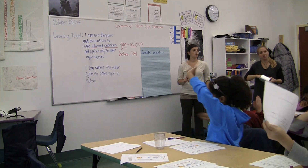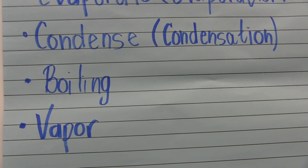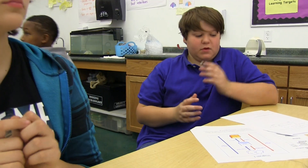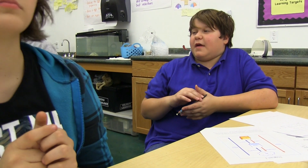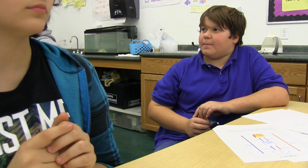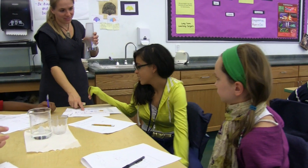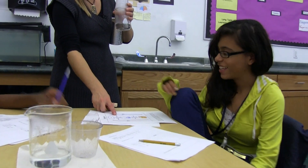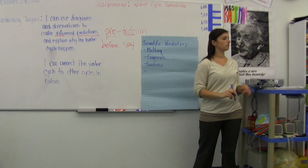One goal of the lesson was for students to use scientific vocabulary. Students tend to say 'steam' or 'fog,' but the correct scientific term is 'water vapor.' Similarly, instead of saying 'water rising,' the teacher encouraged use of 'evaporation,' and instead of 'coming down,' students were guided to say 'condensation.'